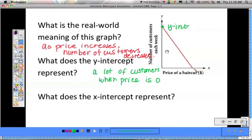What does the x-intercept mean? Well it means when the price of the haircut is really high, there's zero customers.